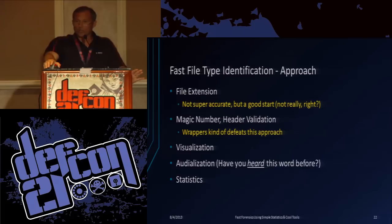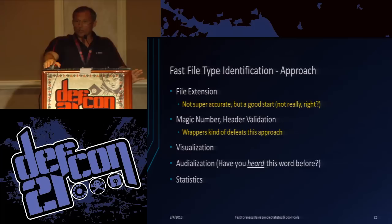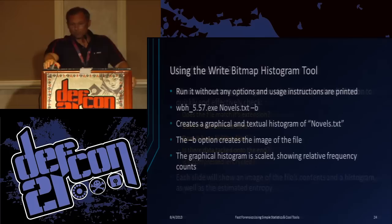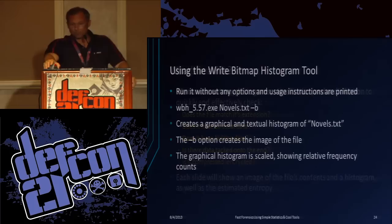Here's how you identify a file. You got this new file - what is it? You look at the extension, but that doesn't mean anything. You look at the magic number - that may mean something, if it's not disguised. We can apply a visualization - that's what this tool does. It will also do the audioization, which is a strange word but it's actually out there. And then statistics. So here's what we check: what's in it, does it match the extension, does it have unusual data, hidden data, appended data, is part of it compressed. We can tell a lot. That's just a command line for using the histogram tool - all the tools have usage functions.